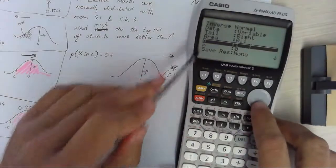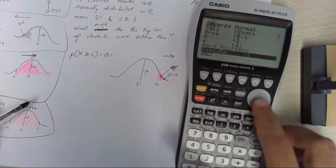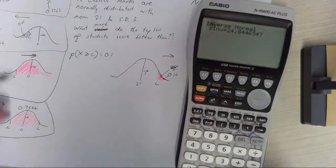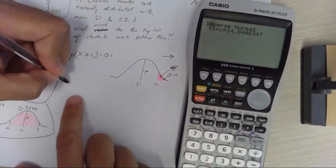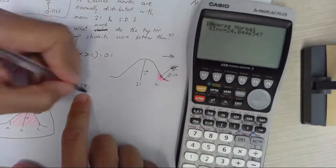The area we're looking for is 0.1. Now you need to be careful here. Standard deviation is 3 and the mean is 21.